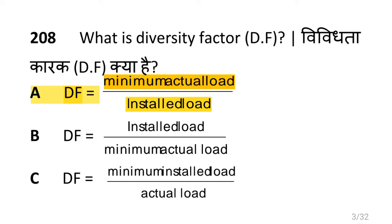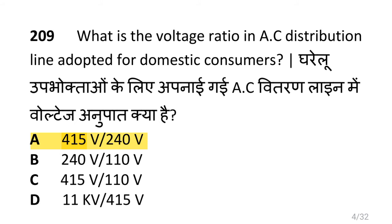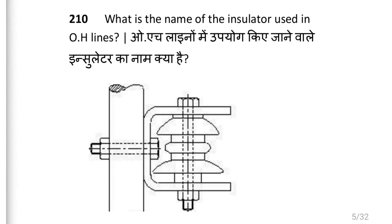What is the diversity factor? Diversity factor is equal to minimum actual load upon installed load. What is the voltage ratio in AC distribution line adopted for domestic consumers? That is 415 volt divided by 240 volt.